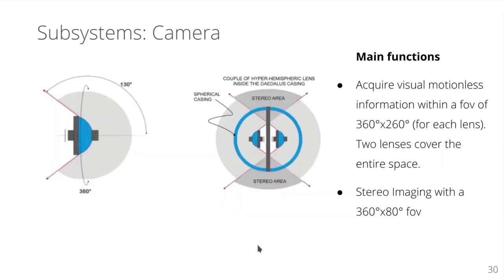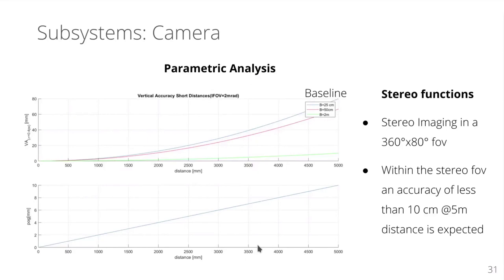The camera subsystem consists of hyper-hemispherical lenses inside the Daedalus casing. They have a very wide field of view, that is 360 by 260 degrees. When put opposite to each other, we even yield a stereo area of 360 by 80 degrees. The parametric analysis shows that even a small baseline of the two cameras of a stereo rig, such as 20 centimeters, yields an accuracy of 10 centimeters at a distance of 5 meters.